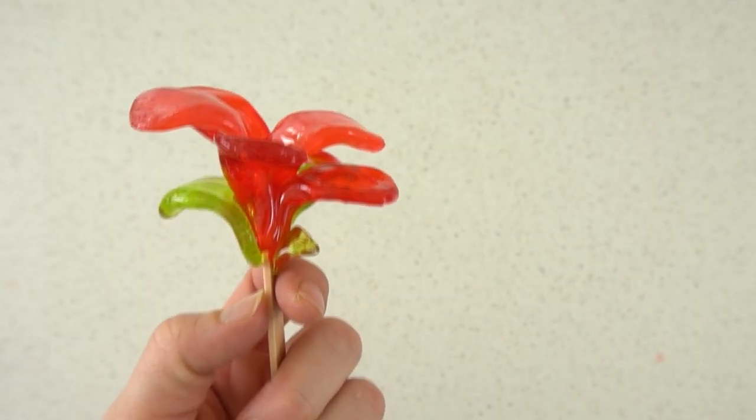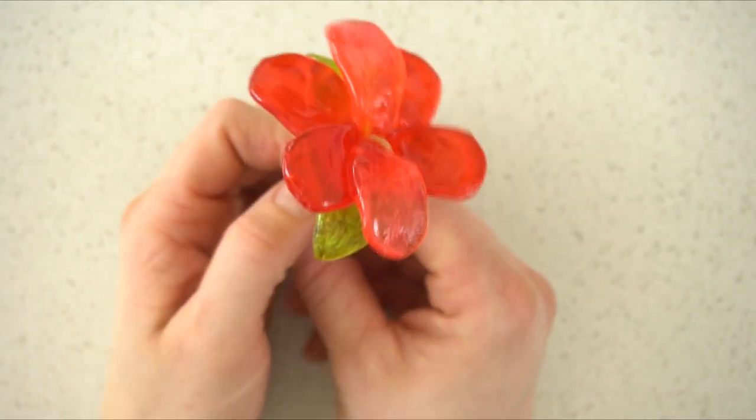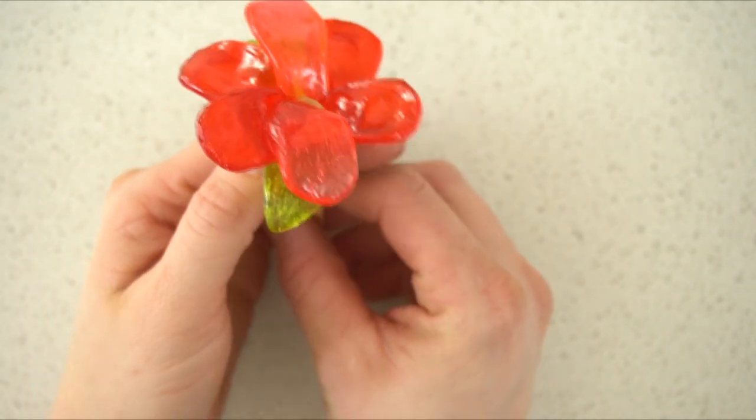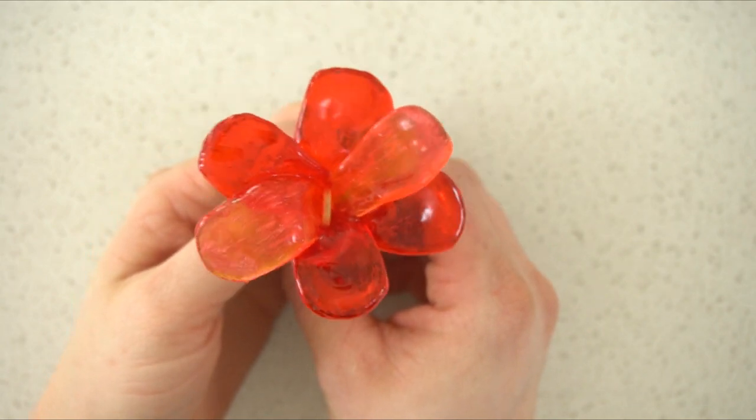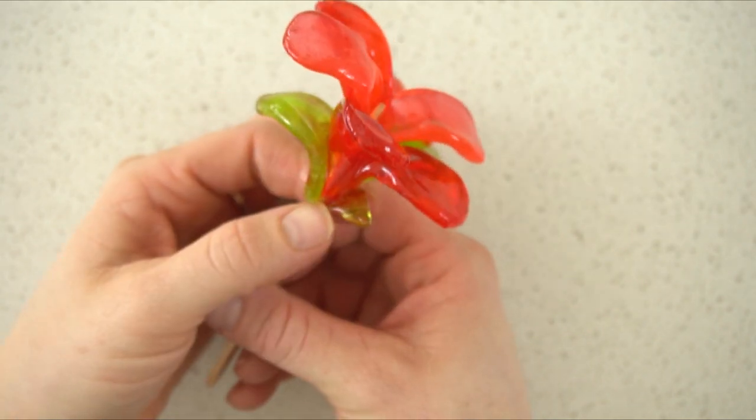Who knew Jolly Ranchers could be sculpted with? They almost look like stained glass. You could do so many different art projects with these. But today I'm just going to show you how to make a simple flower for Valentine's Day.